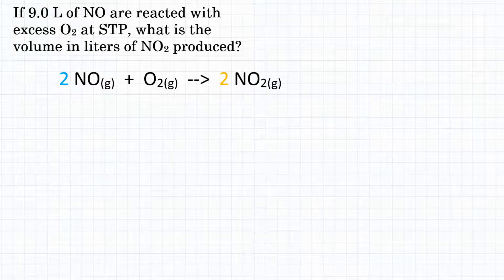Alright everyone, the problem says: if 9.0 liters of NO are reacted with excess O2 at STP, what is the volume in liters of NO2 produced?